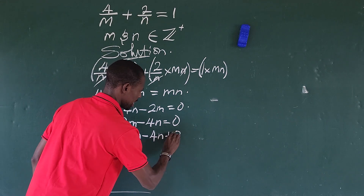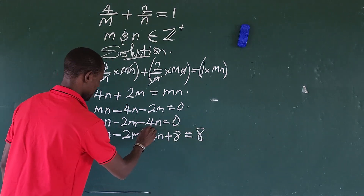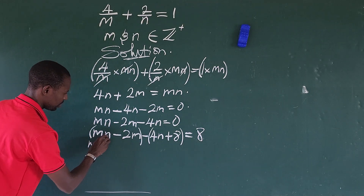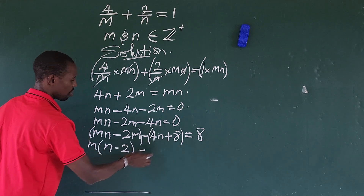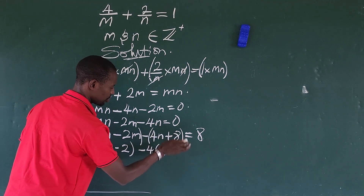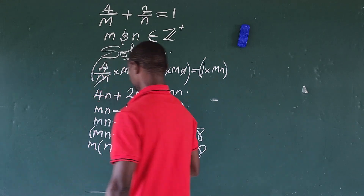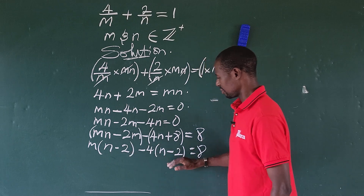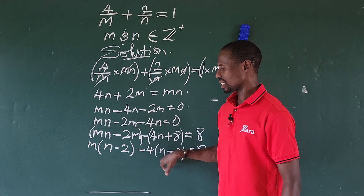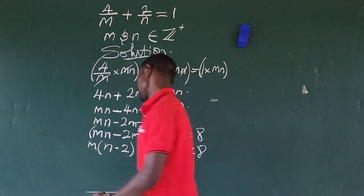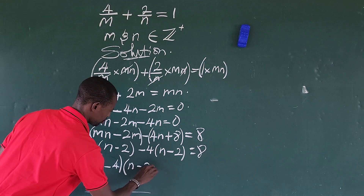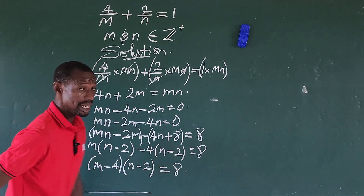So we have mn minus 2m minus 4n plus 8 equals 8 plus 0. At this point I put this in brackets — factoring m from the first two terms gives m times (n minus 2), and factoring 4 from the last two terms gives 4 times (n minus 2). So we can rewrite this as: (m minus 4)(n minus 2) equals 8.